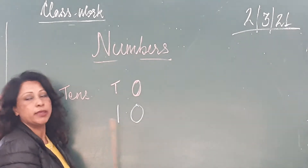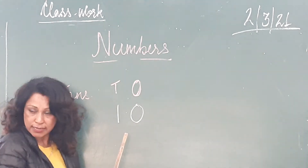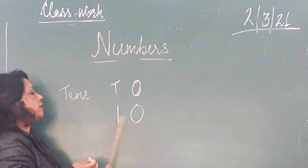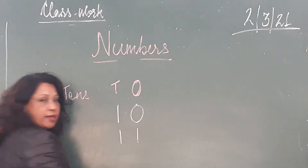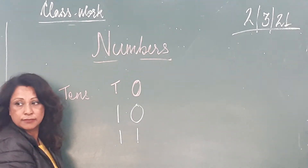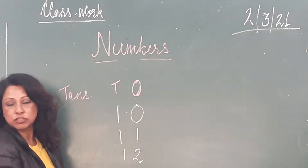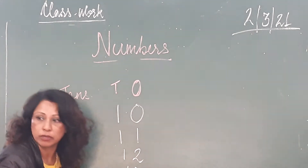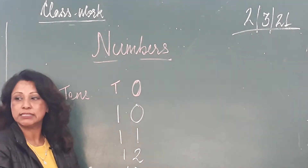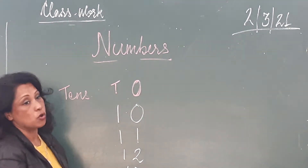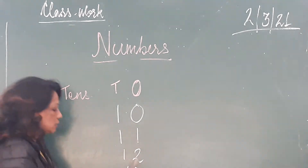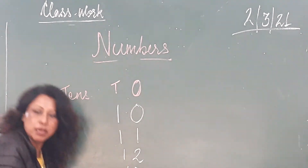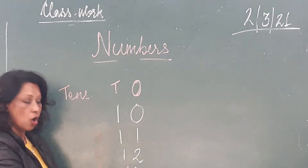After ten comes eleven, then twelve, thirteen, fourteen, fifteen, sixteen, seventeen, eighteen, nineteen, twenty, twenty-one, twenty-two — it carries on. All two digit numbers carry on like that. So the first digit is called ones and the second digit is called tens. Numbers are also called digits.